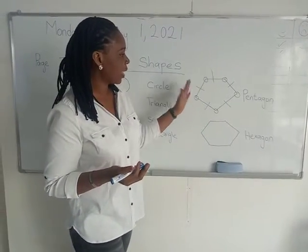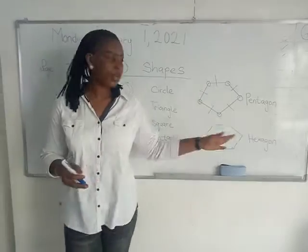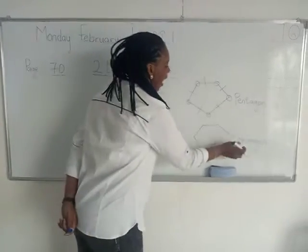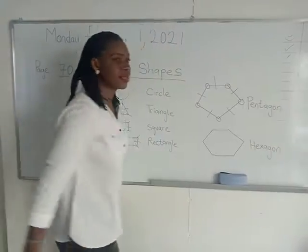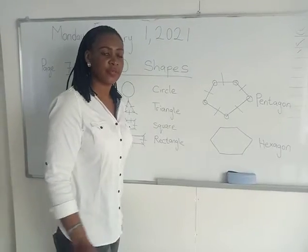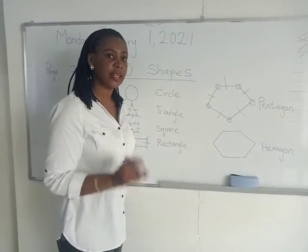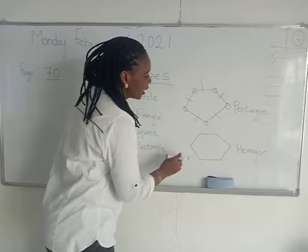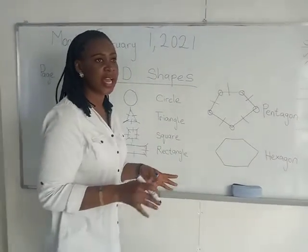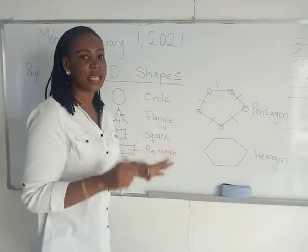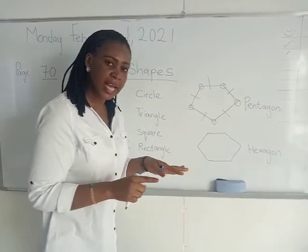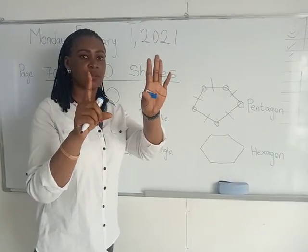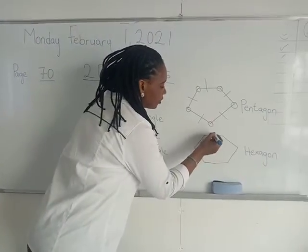Then we go to the last shape, which is a hexagon. A hexagon is a shape with six sides and six corners. How many sides and how many corners? Six.